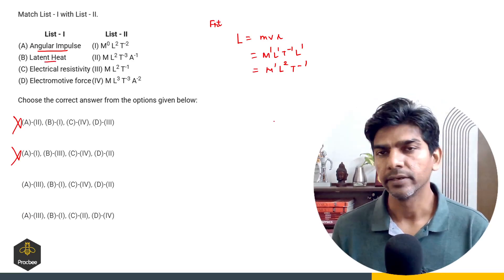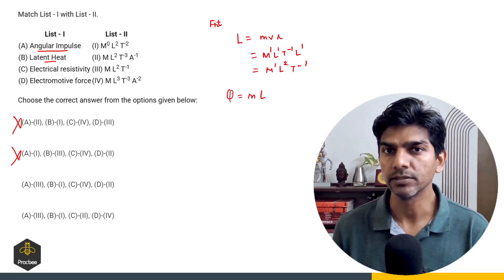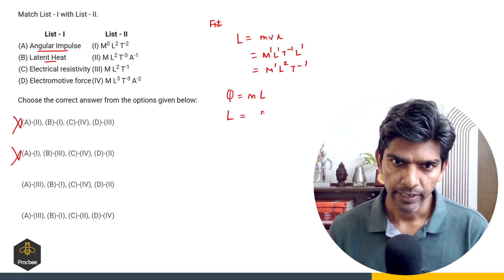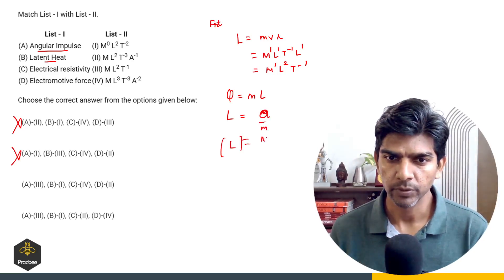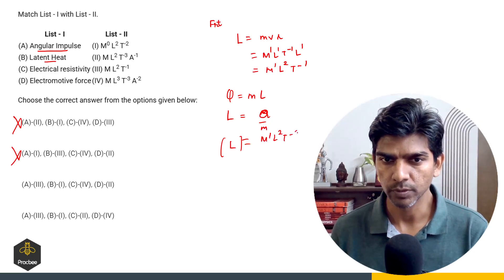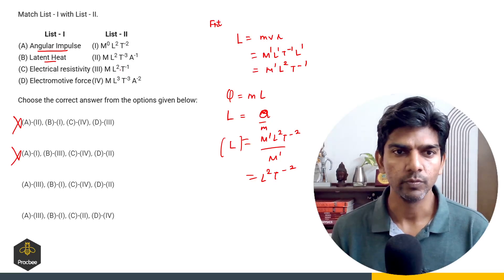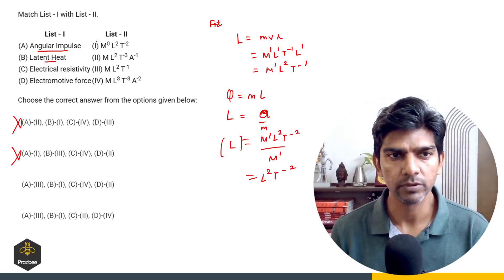Now let us check latent heat. The formula is Q equals M times L, where M is mass and Q is energy. So latent heat equals Q by M. The dimension of latent heat is M raised to power 1, L raised to power 2, T raised to power minus 2 divided by M raised to power 1, giving L raised to power 2, T raised to power minus 2. So the exponents are 0, 2, minus 2. So B corresponds to 1.